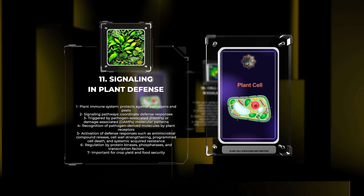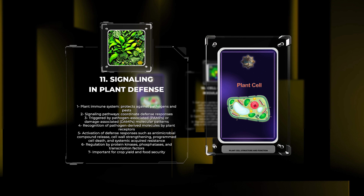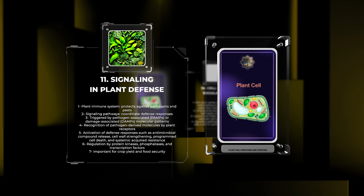Plants have a powerful immune system that protects them from pathogens and pests. Signaling pathways coordinate plant defense responses, triggered by pathogen-associated molecular patterns (PAMPs) or damage-associated molecular patterns (DAMPs). These pathways involve the recognition of pathogen-derived molecules by plant receptors, activating defense responses such as antimicrobial compound release, cell wall strengthening, programmed cell death, and systemic acquired resistance. The complexity of plant defense signaling, regulated by protein kinases, phosphatases, and transcription factors, must be understood to improve crop yield and food security.